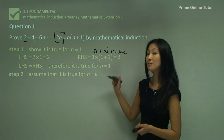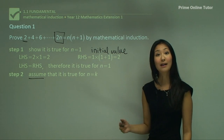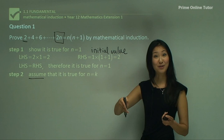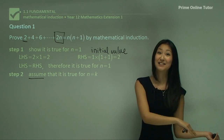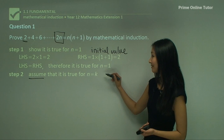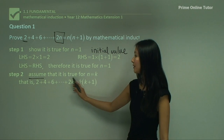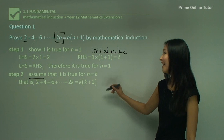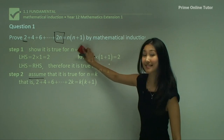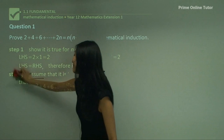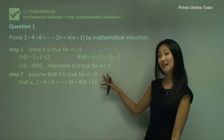Now we can move on to step two, which is making the assumption. Assume that it is true for n equals to k. In terms of dominoes, that's when one domino makes the assumption that if the domino in front falls, it will fall as well and hit the next domino. To write step two, we substitute k into wherever there's n: the left-hand side becomes 2 plus 4 plus 6 plus ... plus 2k, and the right-hand side becomes k times (k plus 1). Remember this assumption, because we always use the assumption from step two in the next step — if you've somehow worked out step three without using the assumption, you know something's gone wrong.